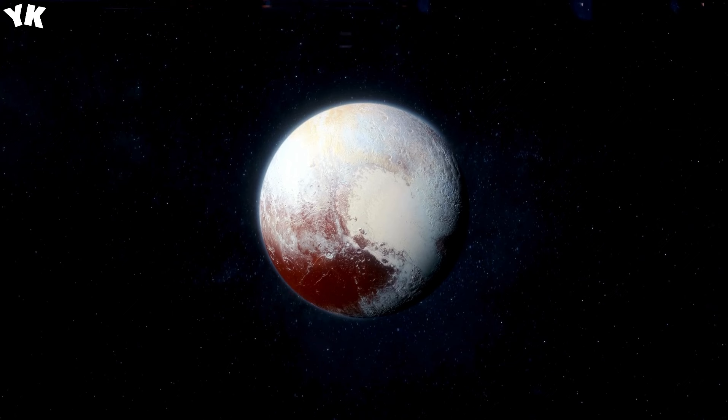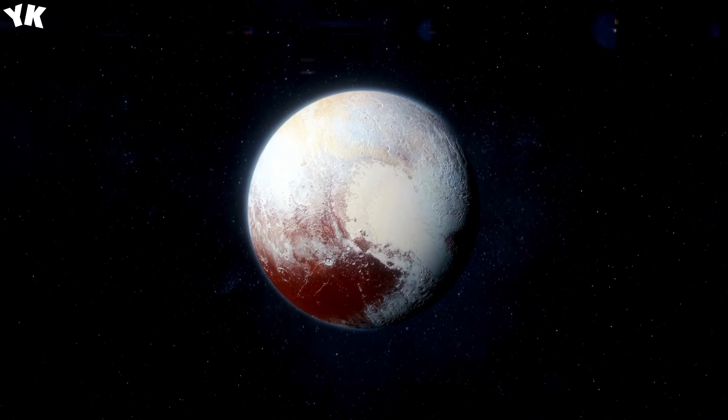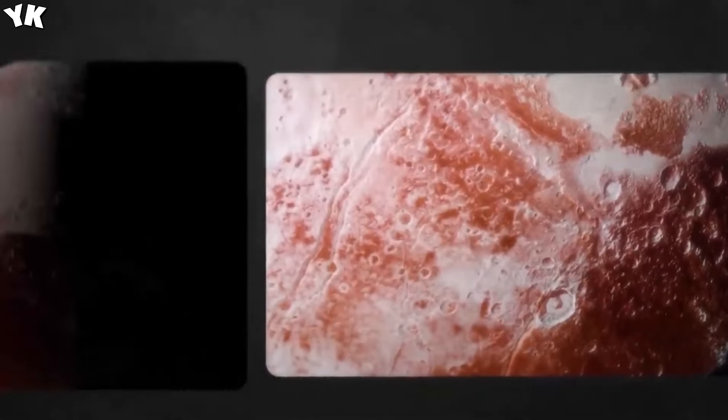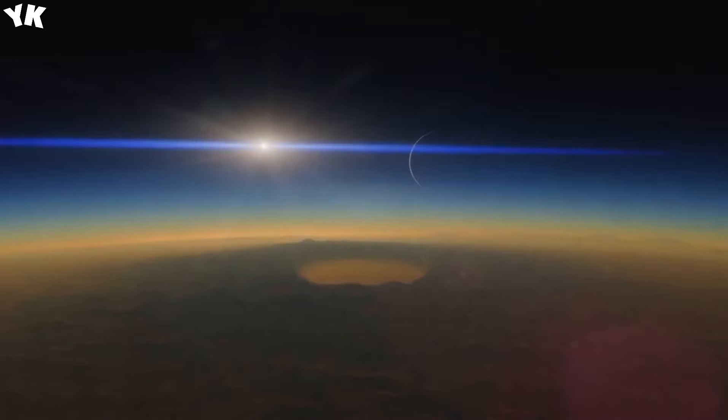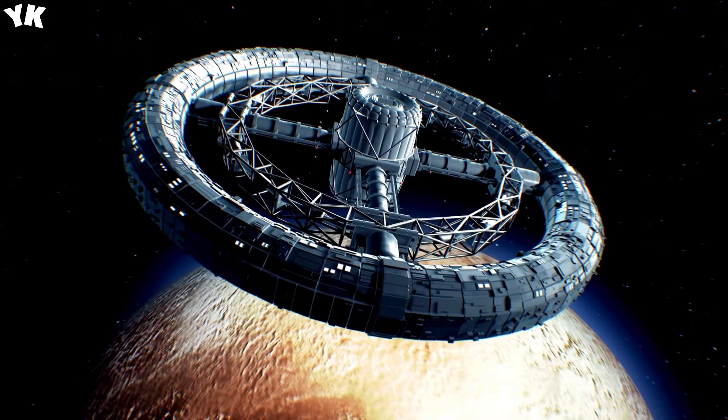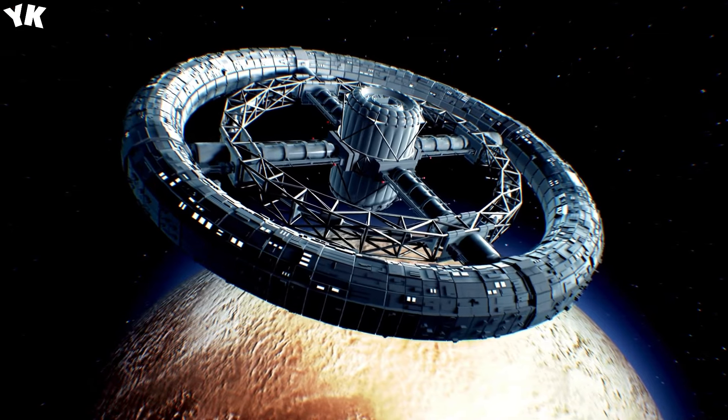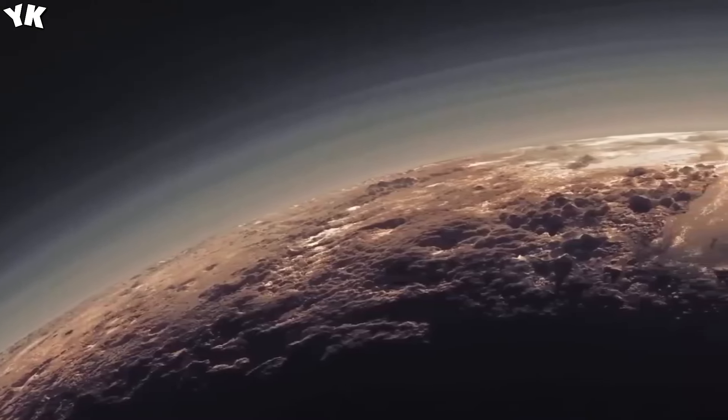Upon closer examination, researchers identified peculiar features such as the heart-shaped basin dubbed Sputnik Planitia. Positioned nearly opposite Pluto's largest moon, Charon, its alignment suggests a potential connection to an underground ocean. Models propose that the formation of this basin triggered the upwelling of water from beneath Pluto's surface. Subsequent freezing of nitrogen gas in the basin's frigid environment resulted in a significant shift in Pluto's alignment.